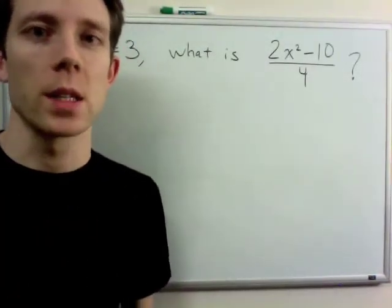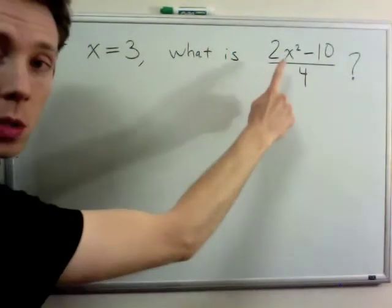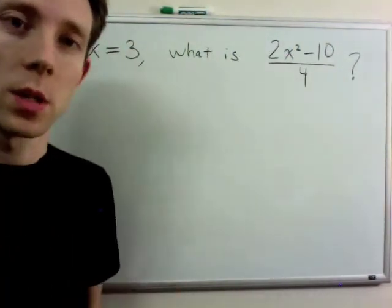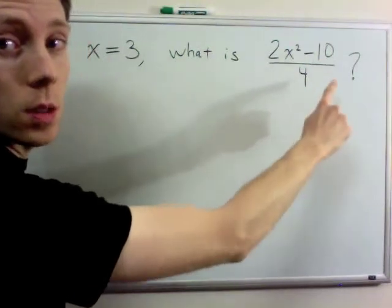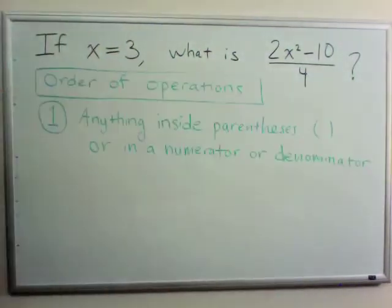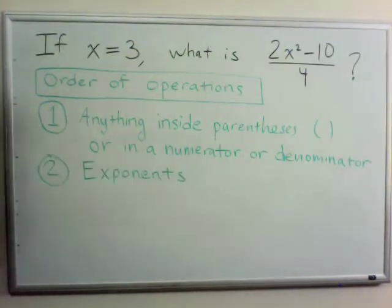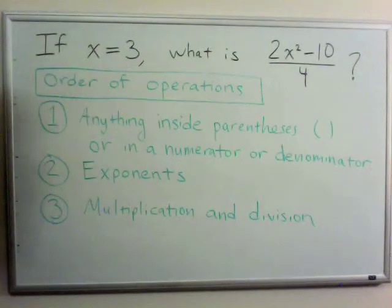Another important thing to know in algebra is the order of operations in which to evaluate expressions. Let's say I have the expression 2x squared minus 10 divided by 4, and x is equal to 3. There are a lot of operations here: a power, a multiplication, a subtraction, and a division. First, we do anything inside parentheses or in the numerator or denominator of a fraction. Next, we evaluate exponents or powers. Third are multiplications and divisions, done left to right. Finally, addition and subtraction.